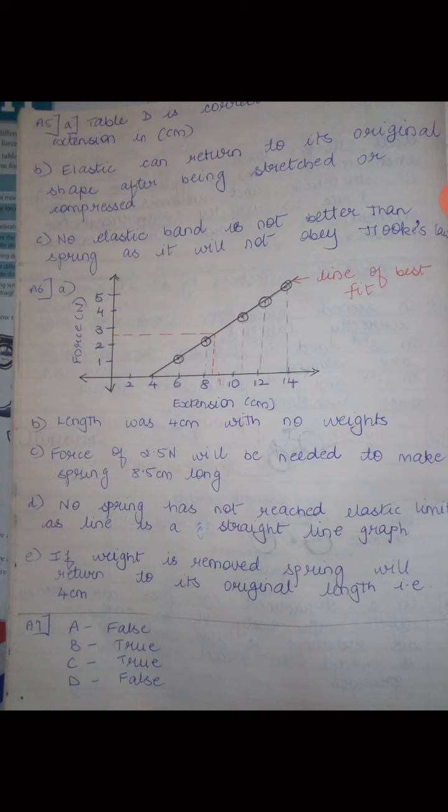Question 6E: what would happen if Tamara removed the weights from the spring? The spring will go back to its original length. The original length with no weight is 4 centimeters, as calculated in answer B. So the answer is it will return to its original length.